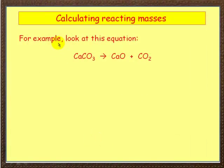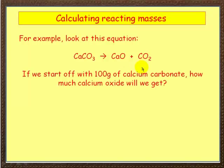Now let's look at this equation here, you may be familiar with this. We've got calcium carbonate and it's being heated to break down to form calcium oxide and carbon dioxide. Now this is the question: if we start off with 100 grams of calcium carbonate, how much calcium oxide will we get?